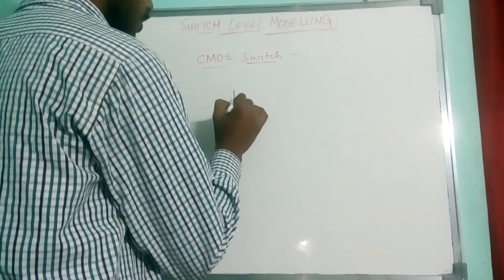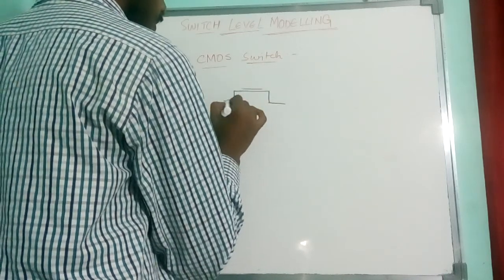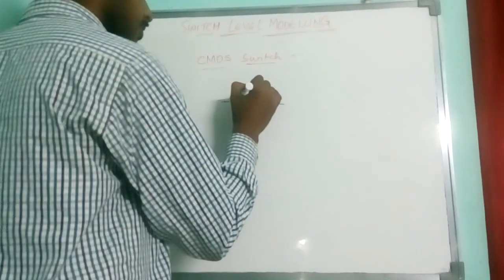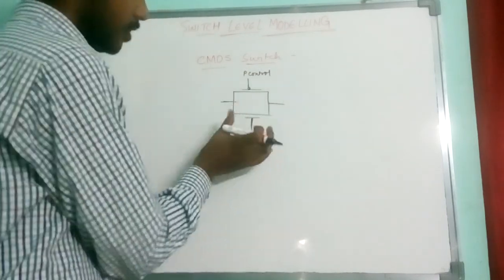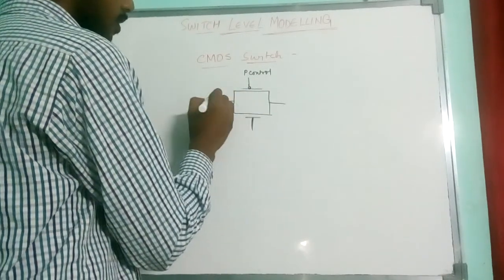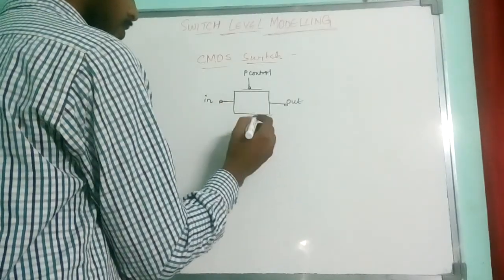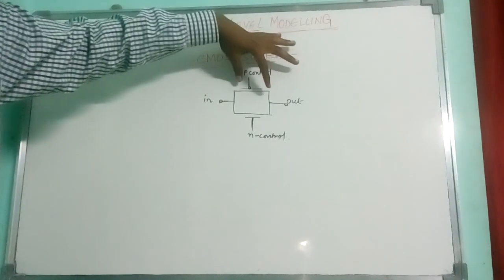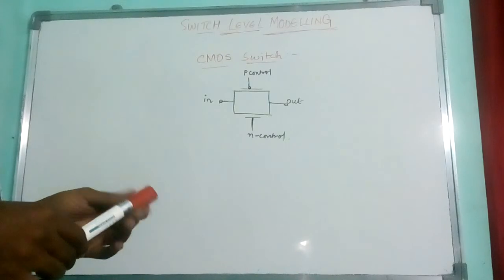We are seeing CMOS inverter, whereas this is CMOS switch. Here we have two transistors, PMOS and NMOS. This is the CMOS switch. This is the PMOS switch and this is the NMOS switch. They both are on top of each other like this.